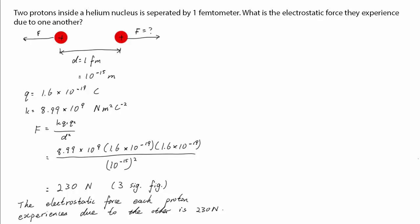We can also find the acceleration that each proton will experience due to the other if there was no strong force holding them together. The mass of a proton is 1.67 times 10 to the power of negative 27 kilograms. Using F equals ma, we can find the acceleration that the proton experiences. Acceleration roughly equals 10 to the power of 29 meters per second squared.